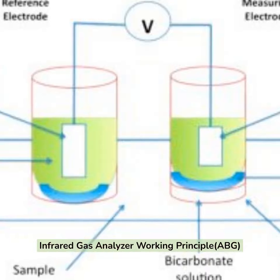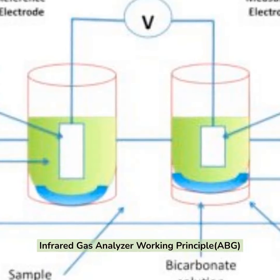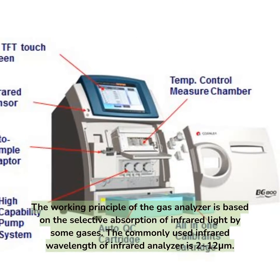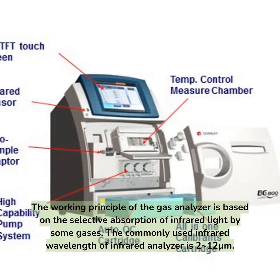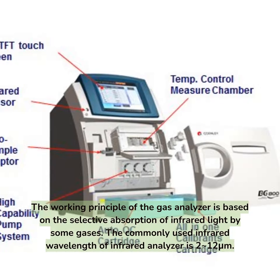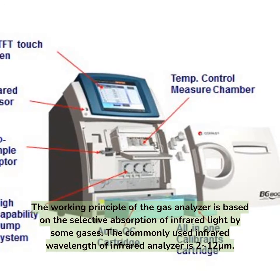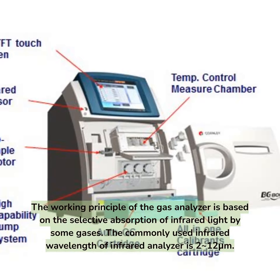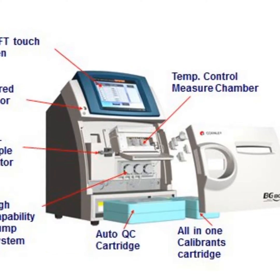Infrared gas analyzer working principle ABG: the working principle of the gas analyzer is based on the selective absorption of infrared light by some gases. The commonly used infrared wavelength of the infrared analyzer is 212μm.